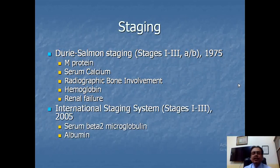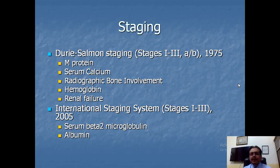For staging of the disease: the Durie-Salmon staging system, coined in 1975, ranges from Stage 1 to 3 (A and B), and is based on M protein presence, hypercalcemia, radiographic bone involvement, hemoglobin level, and renal failure or myeloma kidney. The International Staging System also ranges from Stage 1 to 3, based on elevated serum beta-2 microglobulin and albumin levels.